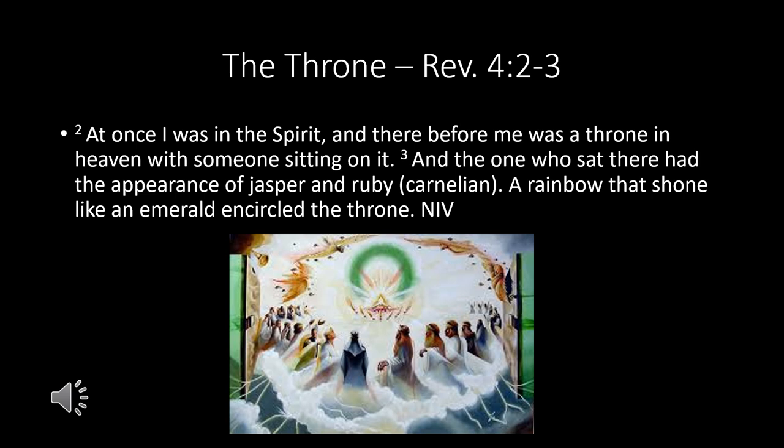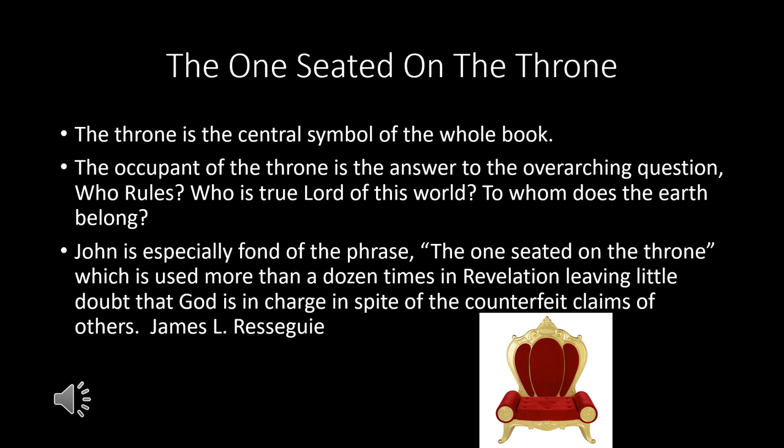Verse 2: 'At once I was in the spirit, and there before me was a throne in heaven with someone sitting on it, and the one who sat there had the appearance of jasper and ruby. A rainbow shone like an emerald circled around the throne.' Immediately John is in the spirit — he's about to experience something different. He's going to see and hear what cannot be seen and heard with ordinary eyes and ears.